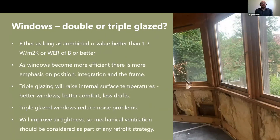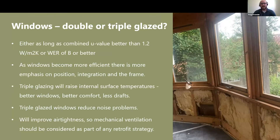The next item to look at is windows, especially double or triple glazed units. Nowadays there's not that much difference between a very efficient double glazed unit and an inefficient triple glazed unit. What you typically want to aim for is a combined U-value of glazing and frame of better than 1.2. Another useful metric to be aware of is the window energy rating — you're typically looking at B or better in terms of that rating.